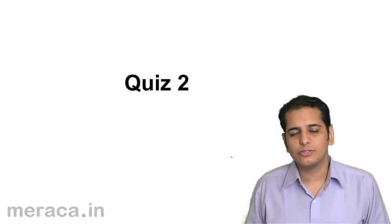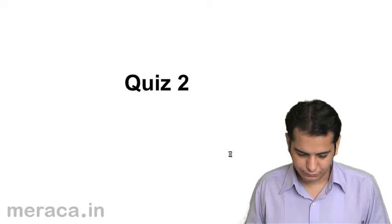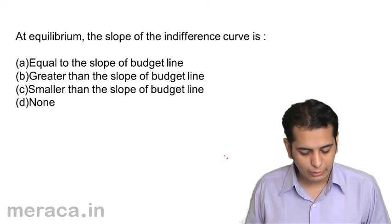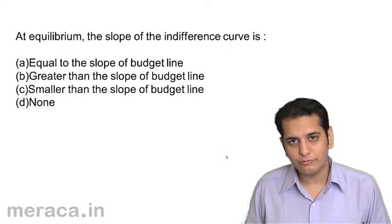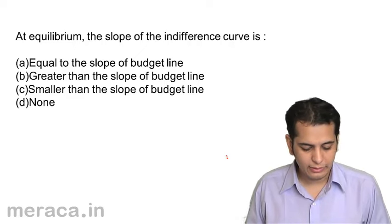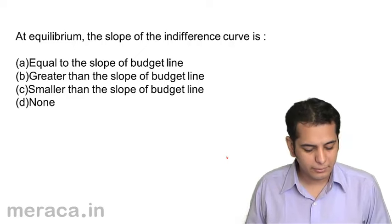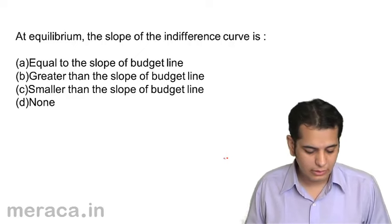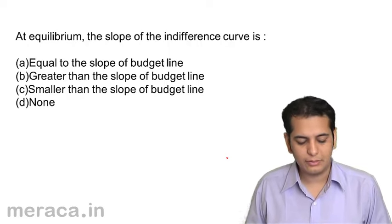Now, let's take a short quiz on the indifference curves. First question: at equilibrium, the slope of the indifference curve is A) equal to the slope of the budget line, B) greater than the slope of the budget line, C) smaller than the slope of the budget line, or D) none.